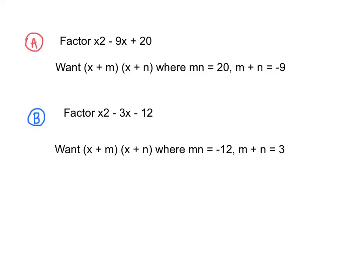Our first problem is to factor x squared minus 9x plus 20. When we go about solving this, we want our two factored parts to take the form of x plus something. These two numbers, when multiplied together, should equal 20, and when added together, should equal negative 9.